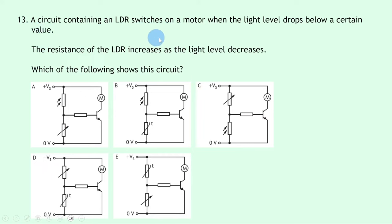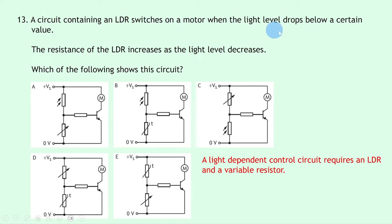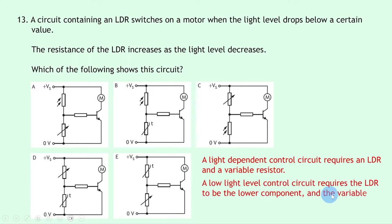Question 13: a circuit containing an LDR switches on a motor when light level drops. A light-dependent control circuit requires an LDR and a variable resistor, so we rule out options B, D, and E which use a thermistor. That leaves A and C. A low-light-level control circuit requires the LDR as the lower component and the variable resistor as the upper component, which is option C.